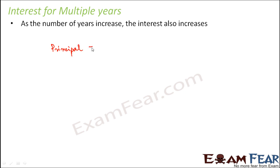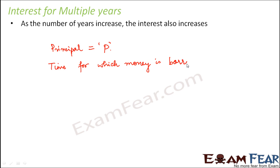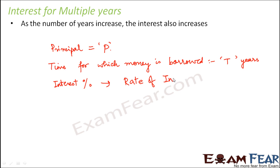Let's say the principal — the money given by the bank to you — is P. The time for which the money was borrowed is T years; T could be 5, 10, 20, 30, or anything. The percentage of interest offered by the bank is called the rate of interest. Interest is always offered as a percentage per annum, so this percentage per annum is called the rate of interest, denoted as R percent per annum.